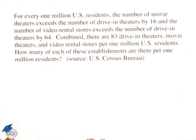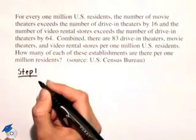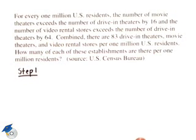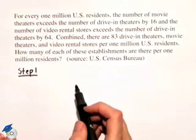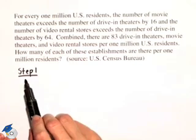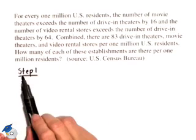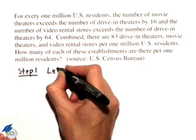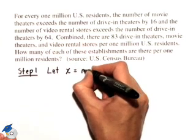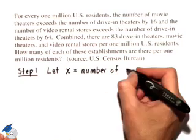The first step is we need to figure out where to start, and we want to represent X as one of the quantities. In step 1, we have to figure out what to let X equal, and it's nice to let X equal something that we know very little about. We know something about the movie theaters and video rental stores because they exceed drive-in theaters by specific amounts. So it makes sense to let X equal the number of drive-in theaters, because we know so little about that.